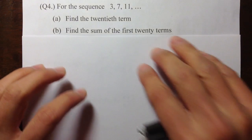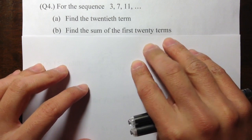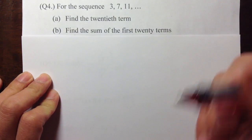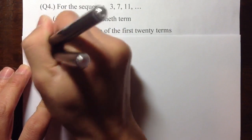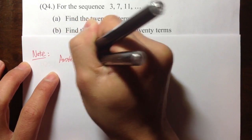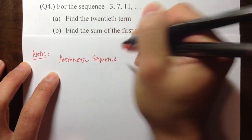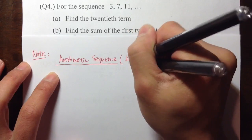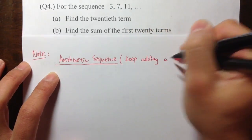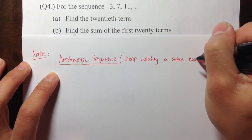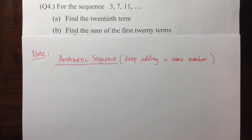Question 4 deals with sequences, and this is one of my favorite topics in math. We have seen two different types of sequences, and as a review, let's talk about what we need to know. The first type is the arithmetic sequence. An arithmetic sequence is the case where you keep adding the same number over and over — that's called the common difference.